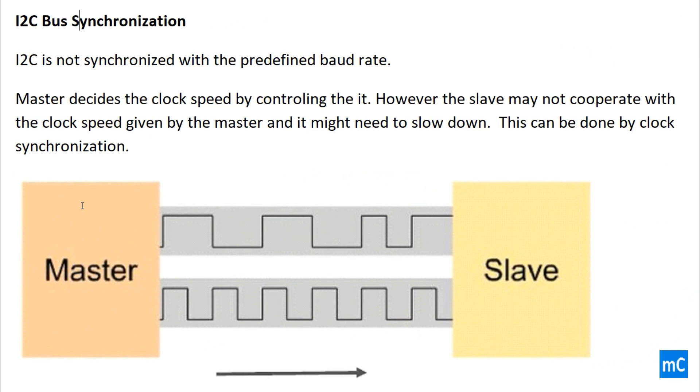Let's see I2C bus synchronization. I2C is not synchronized with the predefined baud rate like UART, so that clock will be given from the master to the slave. Master decides the clock speed by controlling it.